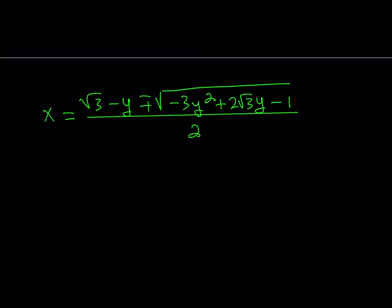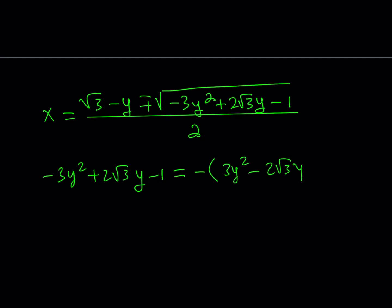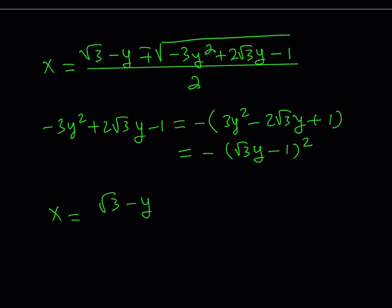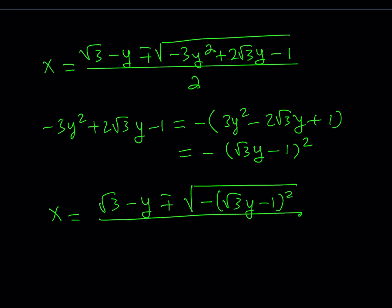Now let's simplify what's inside the radical. I can factor out a negative 1, giving negative 1 times (3y squared minus 2 root 3 y plus 1). Looking carefully at what's inside the parentheses, it's a perfect square — it is actually (root 3 y minus 1) quantity squared. So inside the radical we have negative (root 3 y minus 1) squared.